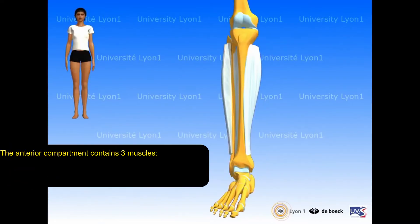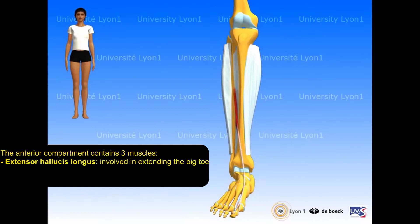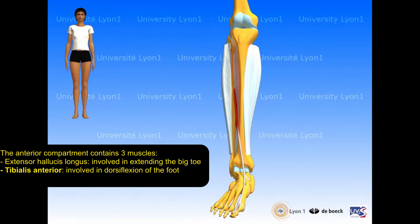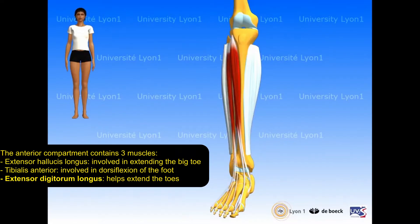The anterior compartment contains three muscles. Extensor hallucis longus, involved in extending the big toe. Tibialis anterior, involved in dorsiflexion of the foot. And the extensor digitorum longus, which helps extend the toes.